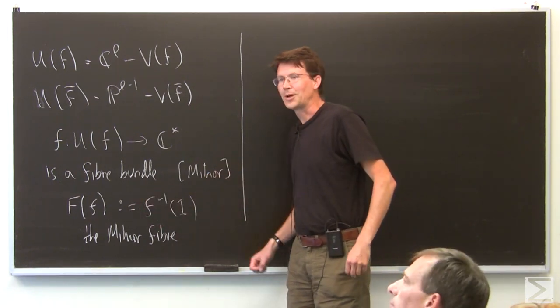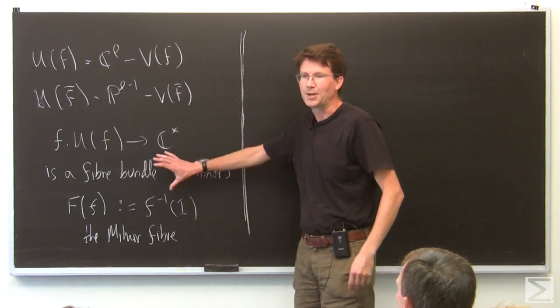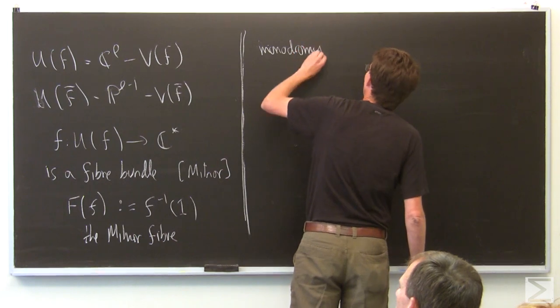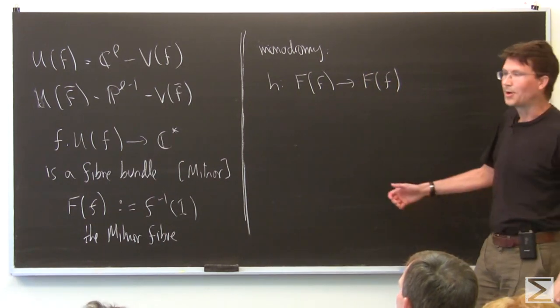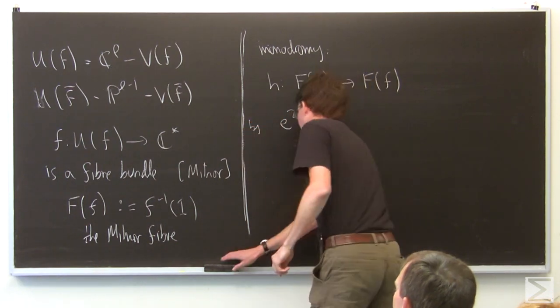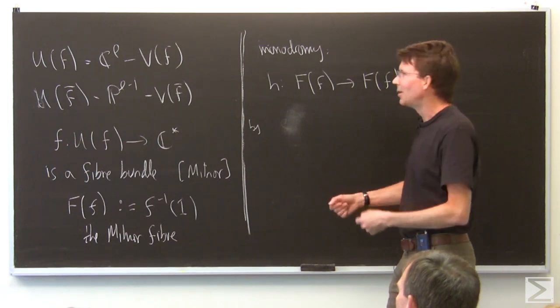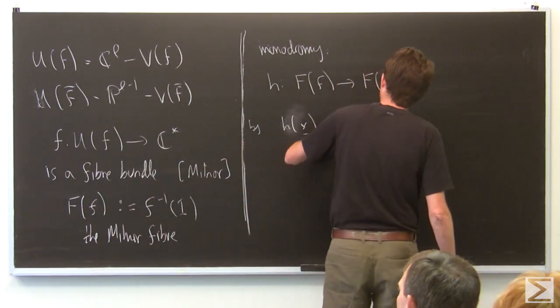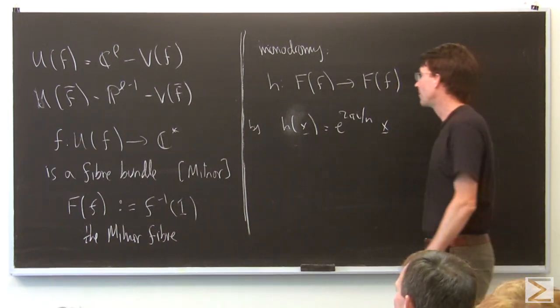The Milner fiber in question then is the typical fiber of this fibration. Since all my fibers are created equal, I'll fix the one over the point one. This is a special setting because I'm talking about the projective hypersurface, so this is a global Milner fiber which has a right to exist. These guys have extra properties coming from the homogeneity, this projective setting.